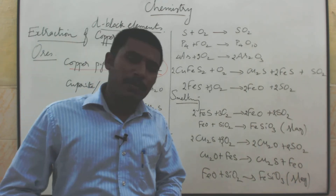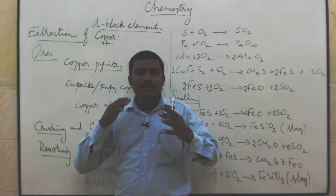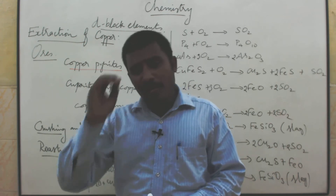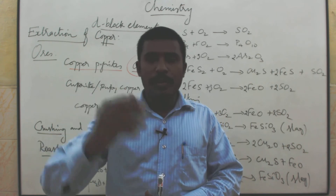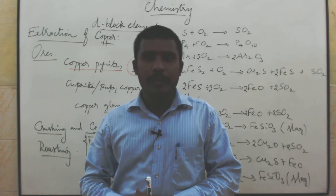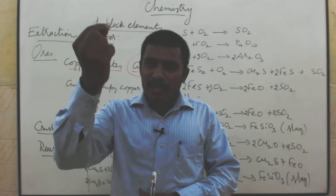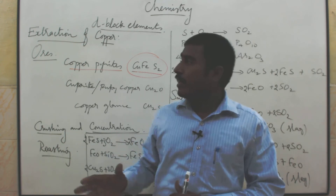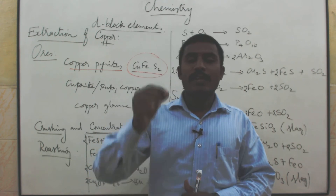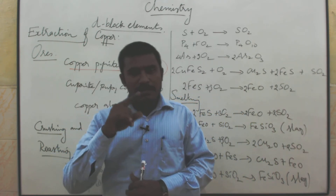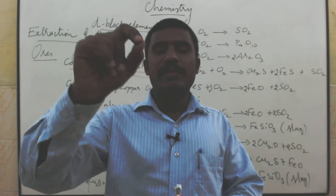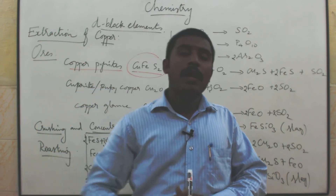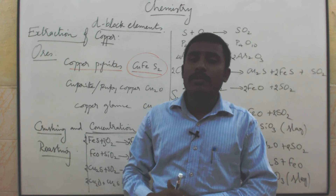Now you got impure copper — it is not pure, so you have to use the electrolytic refining method. In electrolytic refining you need anode, cathode, and electrolyte. The impure metal acts as the anode. Always, for all electrolytic processes, the anode is the impure metal. The unwanted impurities settle down below the anode — that is called anode mud. Pure copper acts as the cathode. The electrolyte is acidified copper sulphate containing sulphuric acid. Electricity is passed and pure metal deposits at the cathode. All unwanted impurities settle below the anode as anode mud.